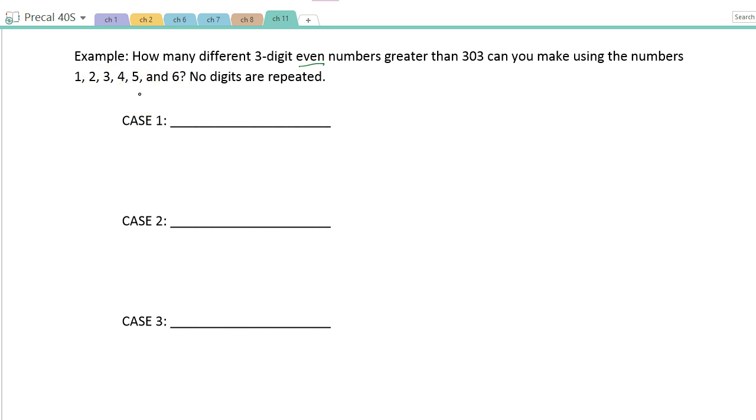Okay, so I'm thinking we've got three, it's got to be a three-digit number, and this last one here has to be an even number if the entire number is even. Greater than 303, so that means this first one here can't be a 1 or a 2, has to be 3, 4, 5, and 6.